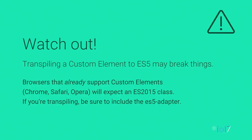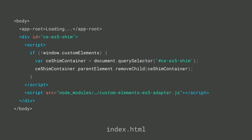A possible foot gun at this phase: if you're transpiling your custom elements down to ES5, but loading them in browsers that natively support custom elements — like Chrome, Opera, and Safari — those browsers expect a custom element to be an ES2015 class. Giving them an ES5 object will break. So if you're transpiling your entire application and loading it in a browser with native support, you need to include a little ES5 shim. If the browser has native support for custom elements, it loads the adapter; otherwise, the adapter self-removes. This could be wrapped into a webpack plugin.